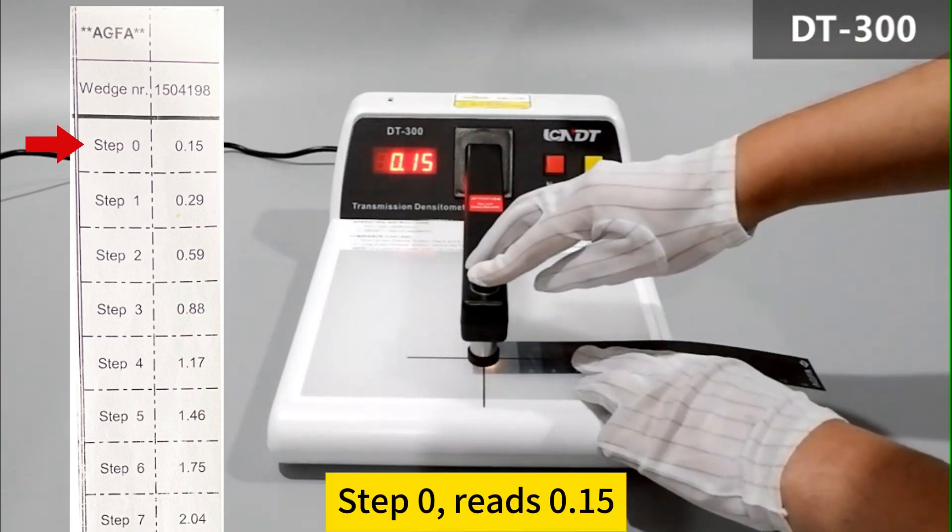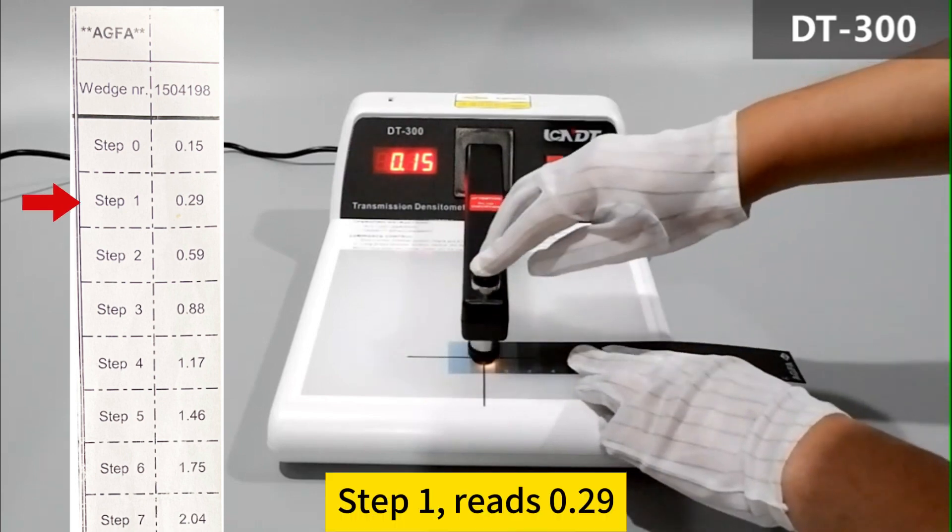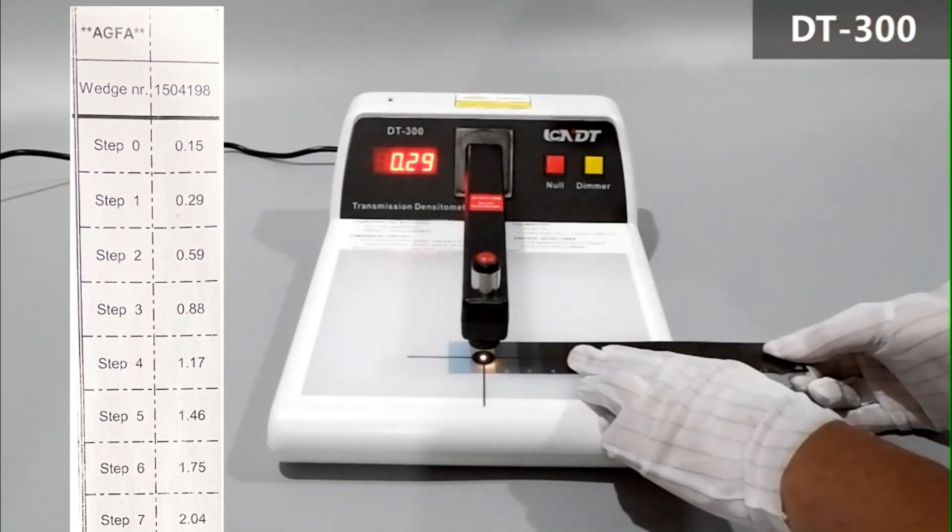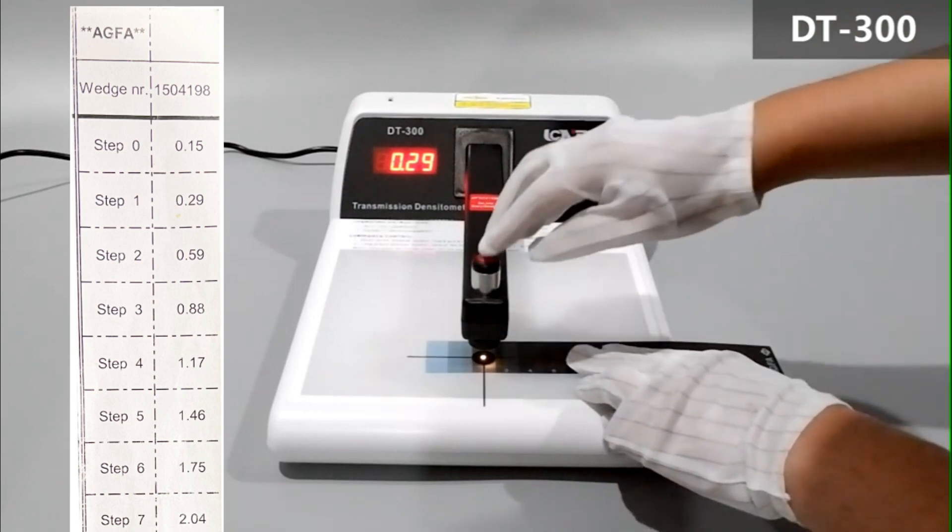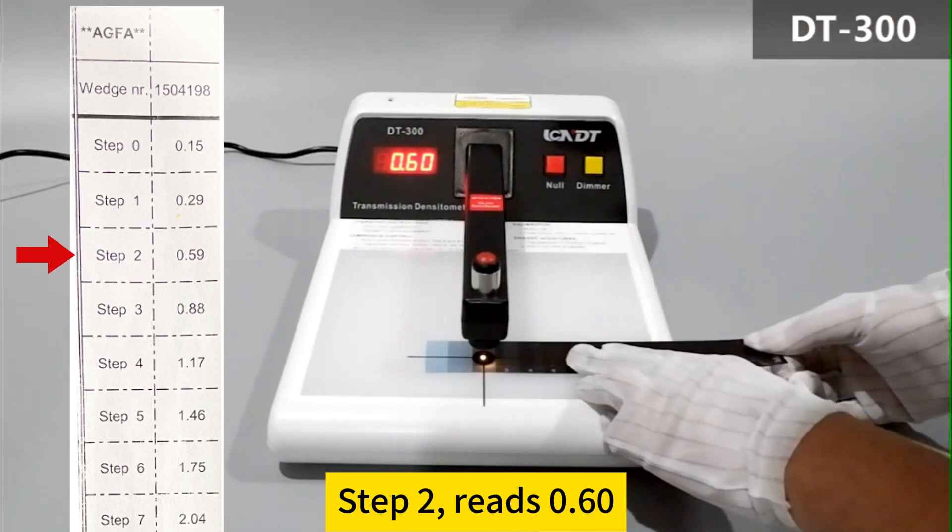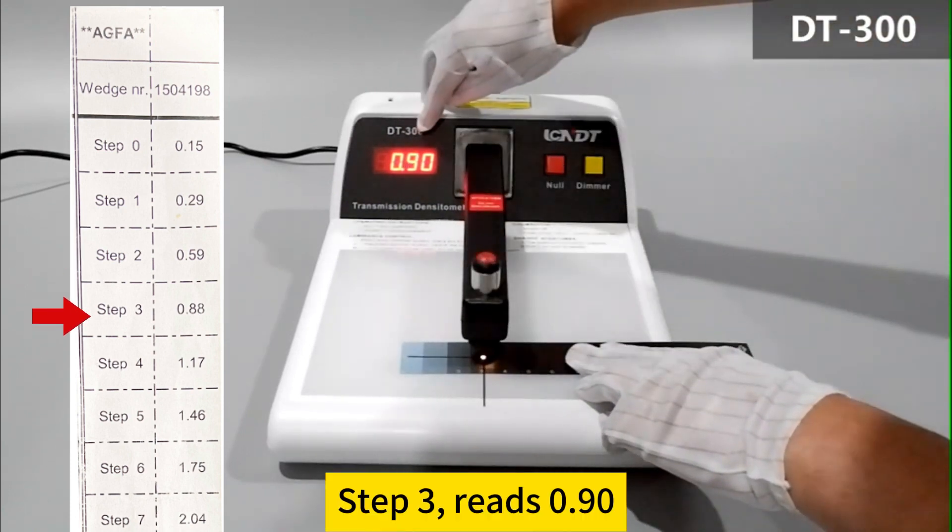Step 0, reads 0.15. Step 1, reads 0.29. Step 2, reads 0.60. Step 3, reads 0.90.